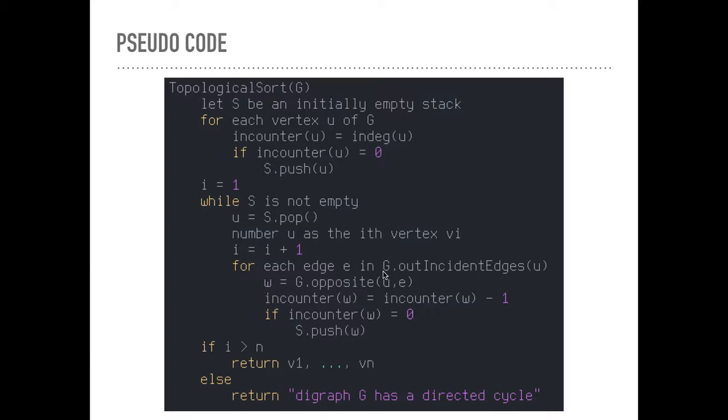And then we say for each edge E in G.outIncidentEdges(u), so there's the outgoing edges from U, w is going to be the opposite vertex. The vertex opposite this vertex U across its outgoing edge.